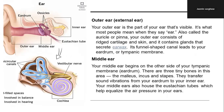The middle ear begins on the other side of your tympanic membrane. There are three tiny bones in this area: the malleus, incus and stapes — collectively called ossicles. They transfer sound vibrations from your eardrum to your inner ear. Your middle ear also houses the Eustachian tube, which helps equalize the air pressure in your ear.